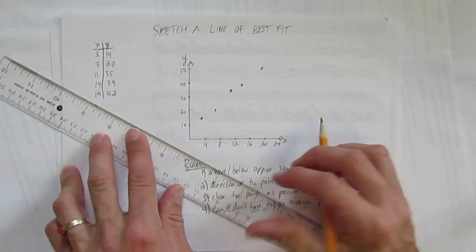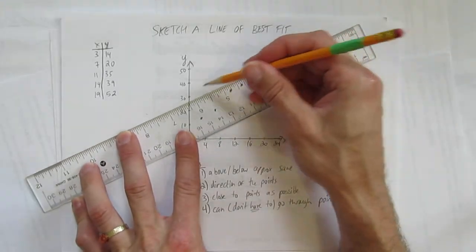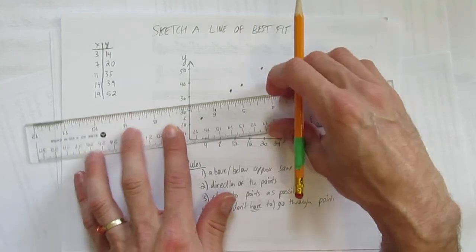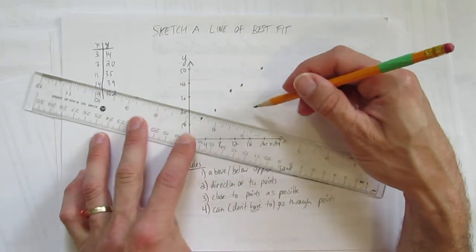So for example, if you didn't have the same above and below, you would draw something like that. No good, one above, four below. In the direction of the points, so obviously don't go like this, that would be bad.